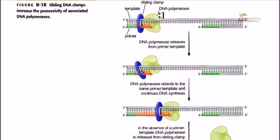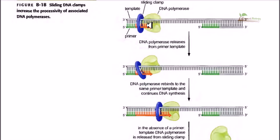DNA polymerase on its own has very low processivity — it cannot add many nucleotides per second. But if it is carrying the sliding clamp or beta clamp with itself, then it can process the DNA much faster; the processivity is increased when it has the sliding clamp protein. To obtain the sliding clamp, it needs the help of the clamp loader protein. This clamp loader protein helps the DNA polymerase gain the sliding clamp, and once it does, the polymerase is no longer vulnerable to falling off from the template strand.